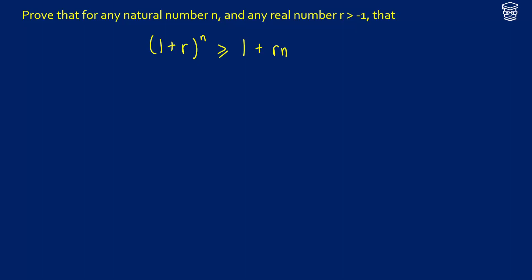Today we're going to be proving Bernoulli's inequality. That is, for any natural number n and any real number r greater than negative 1, 1 plus r to the n is greater than or equal to 1 plus rn.